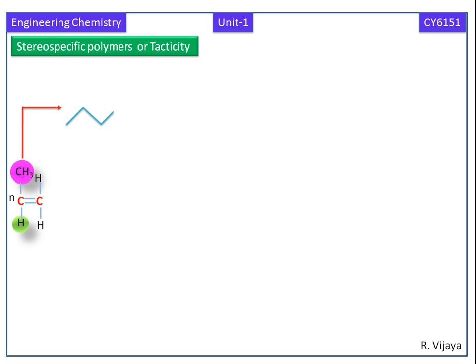The first one is isotactic. Iso means same. Tactic means the arrangement of monomers in polymer with respect to the main chain. This is the main chain of the polymer.